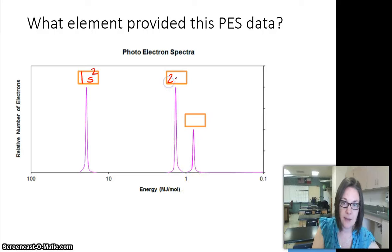This one's going to be 2S2. And then this peak is half the height of this one, so this is only one electron. It's still on the second energy level, but this time it's 2P.